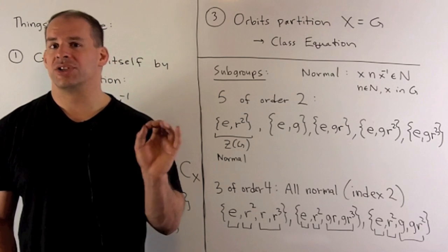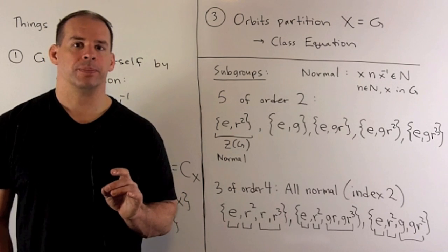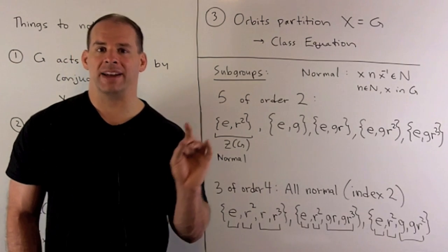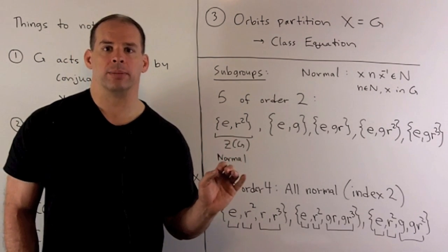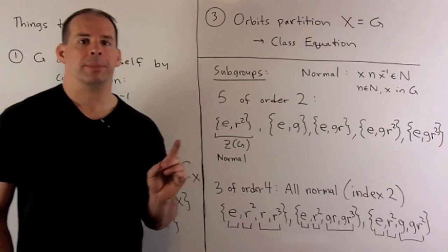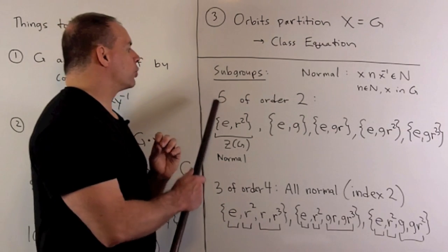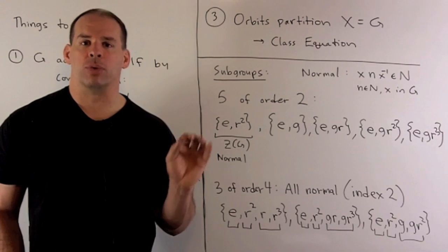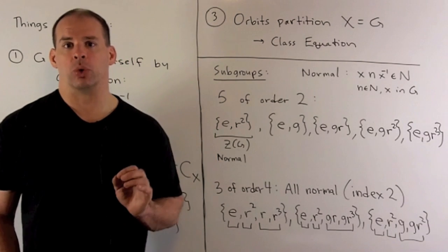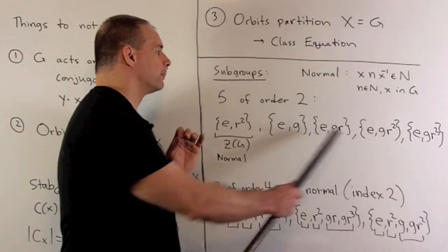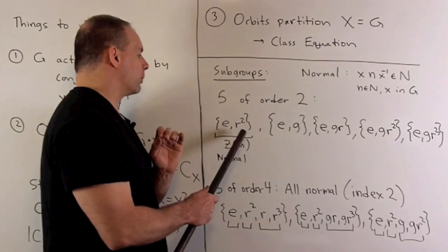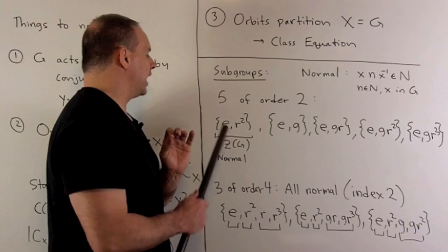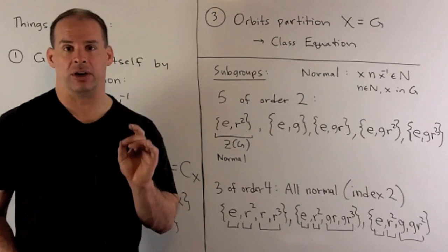Now let's look for subgroups in D8. Of course we always have the trivial subgroup and D8 itself, so we won't write those down. We're going to have five subgroups of order two: you just take the identity element and your favorite element of order two, and that gives you a subgroup. In this case, we only have one normal subgroup of order two, and that's given by the center: E and R squared, rotation by 180 degrees.